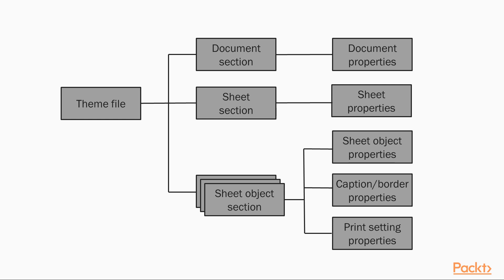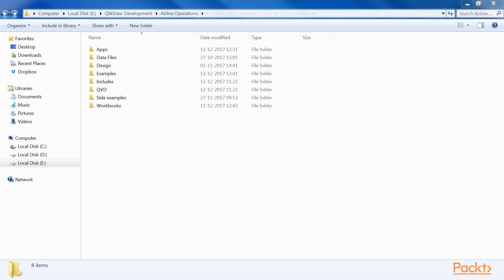The diagram on your screen shows the theme file structure. Notice that there is a separate section for each type of sheet object. A theme is created using the Theme Maker wizard, and can contain settings for as many or few objects as you want, from a single setting for a single chart type, to the entire look and feel of the document. Now, let's step ahead and apply themes.